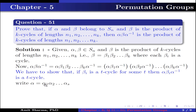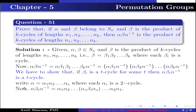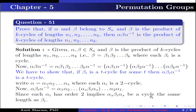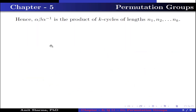Write alpha as a product alpha_1 alpha_2 up to alpha_s, where each alpha_i is a 2-cycle. The value of alpha beta_i alpha-inverse is alpha_1 alpha_2 up to alpha_s beta_i alpha_s up to alpha_2 alpha_1. Since each alpha_i has order 2, alpha_s beta_i alpha_s is a cycle of the same length as beta_i. For more details see question number 15. Hence alpha beta alpha-inverse is a product of k cycles of lengths n1, n2, up to nk.